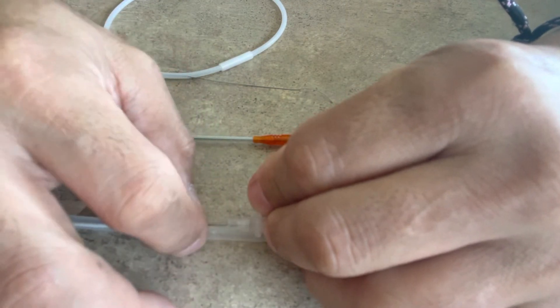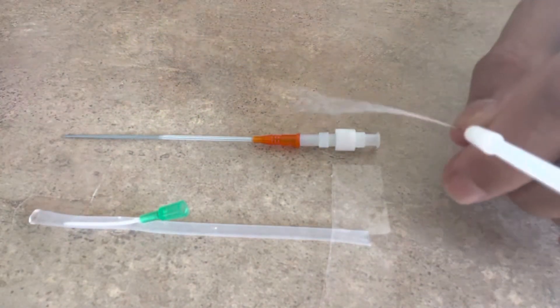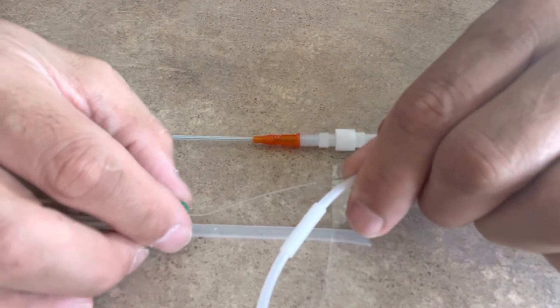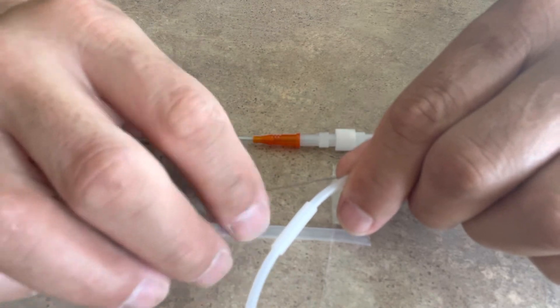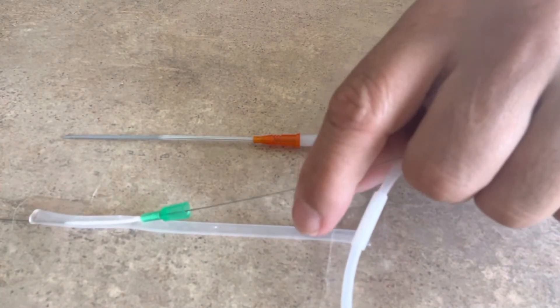And then we're going to use a Seldinger technique, where we're going to take a wire, this 0.018 wire, and we're going to introduce it into the angiocatheter itself. And then we're just going to wire this, rewire this angiocatheter.